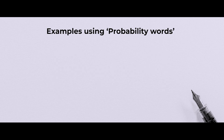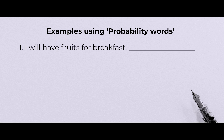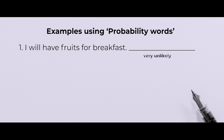Children, let's look at some examples of probability. First sentence: I will have fruits for breakfast. What do you think? If I give the example of myself, I will put this as very unlikely. Why? Because I never take fruits for breakfast.